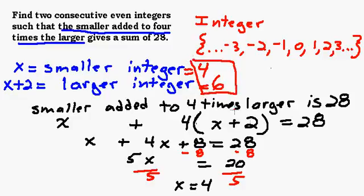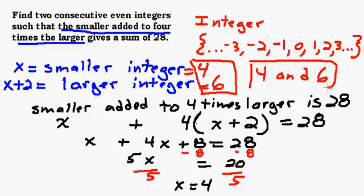We could check it out and see if it works. If we take the smaller and add it to four times the larger, the smaller one is four. If we add that to four times the larger, four times six is 24, so four plus 24 is 28. That worked.